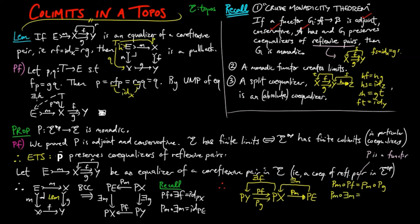Pm composed with exists M is equal to the identity on PE. Exists M composed with Pm is equal to Pf composed with exists G. And Pf composed with exists F is equal to the identity on PX. And these three equations all come from the Beck-Chevalley condition on the left.